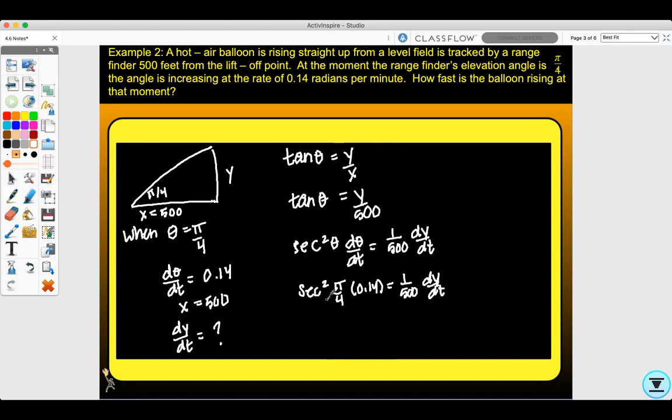So sec² π/4 times 0.14 equals 1/500 dy/dt. Multiplying both sides by 500: 500 sec² π/4 times 0.14 equals dy/dt. How fast is the balloon rising at that moment? It's rising 140 feet per minute.